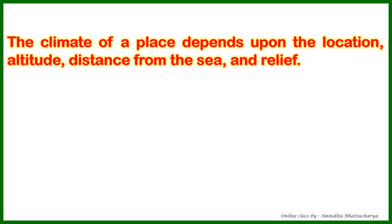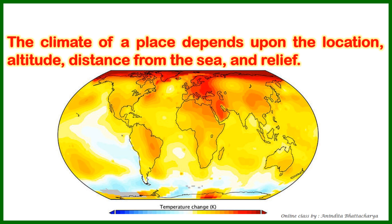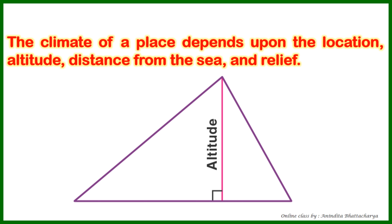The climate of a place depends upon location, altitude, distance from the sea, and relief. Location means which area — whether it is in the tropical, subtropical, equatorial belt, or polar region. Altitude means height from sea level — as you go higher, the temperature falls and becomes low.